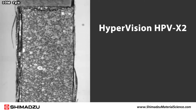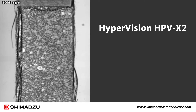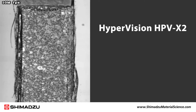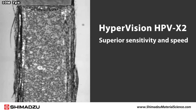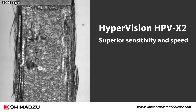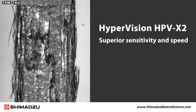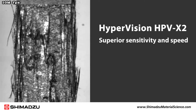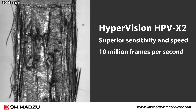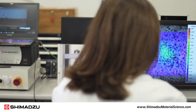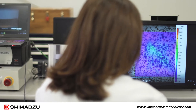Shimadzu's HyperVision HPV-X2 high-speed video camera combines superior sensitivity and speed to enable recording at imaging rates up to 10 million frames per second.